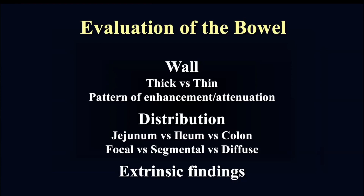We'll consider whether abnormalities involve a specific portion of the bowel — like all the colon or all the small bowel — or whether involvement is more focal or segmental. We'll also use the advantages of CT and MR imaging, where we can see not just what's going on in the bowel lumen, but also what might be going on outside of the bowel to clue us in on the etiology.